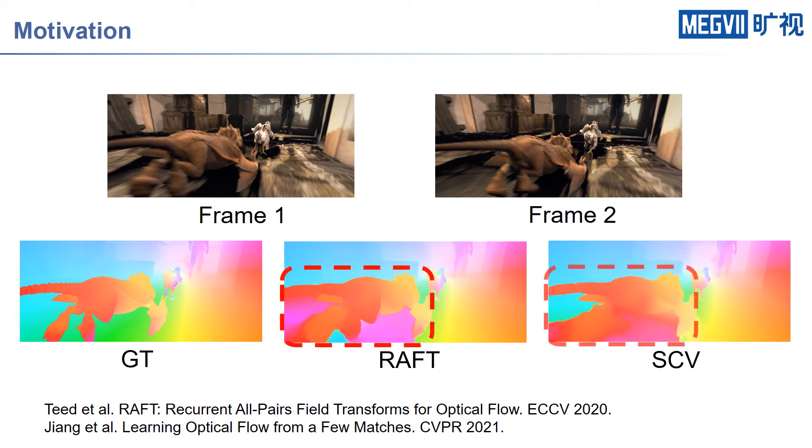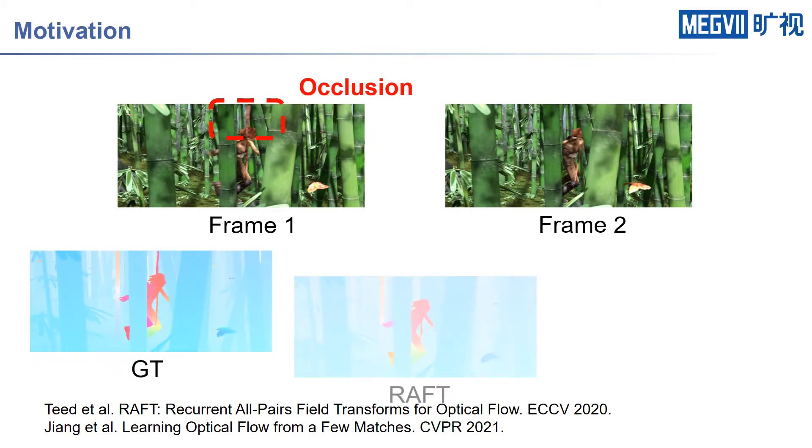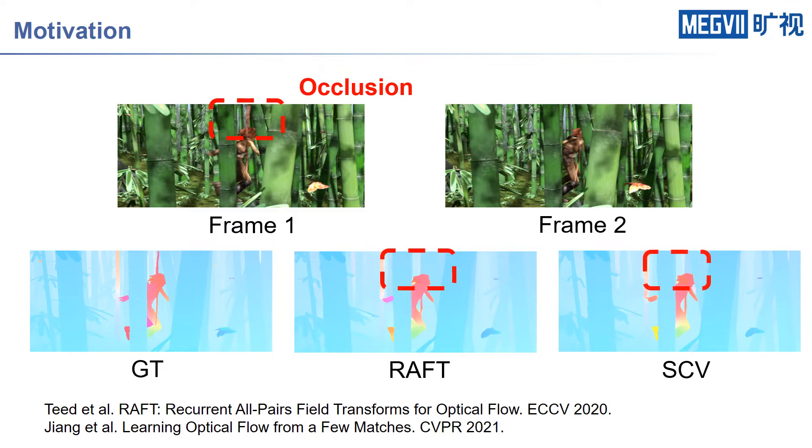motion blur, illumination change, etc., where the basic brightness constancy assumption is broken to some extent. As we can see, they suffer from ambiguous matching.